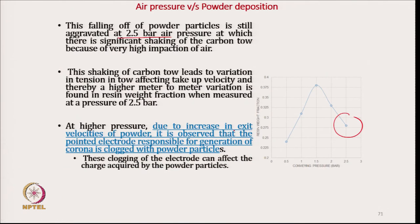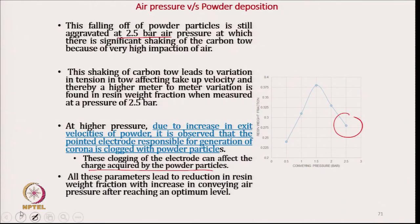At higher pressure, due to increased exit velocity of powder, the pointed electrode responsible for generation of corona gets clogged with powder particles. This clogging of the electrode affects charge acquisition by the powder particle — if it clogs, charging will not be proper. These parameters are all responsible for reduction in resin deposition beyond a certain level of conveying pressure.